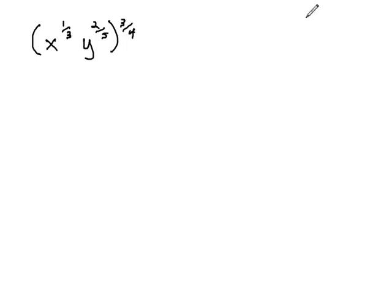Recall that if we have a product raised to some exponent, we can put that exponent onto each factor, giving us a to the m, b to the m.